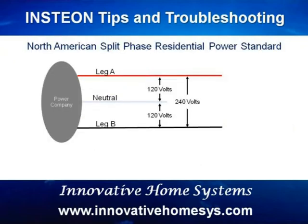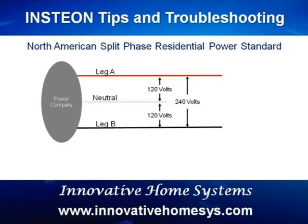The commercial power standard commonly used in North American residences and light commercial applications can be thought of as two separate 120-volt power sources that, when added together, produce the 240 volts used for heavy duty applications like electric heating, air conditioning, electric ranges, and clothes dryers. The key words here are two separate sources. While in reality they are connected in the power company transformer on your block, the two sources effectively isolate the Insteon signals from one source or leg to the other. In other words, an outlet connected to leg A entering your home system may not provide a suitable path for Insteon signals to travel to an outlet wired to leg B. The result is an Insteon device that works when plugged into some outlets but not others.